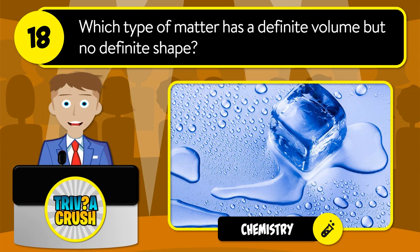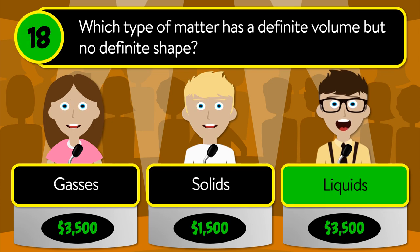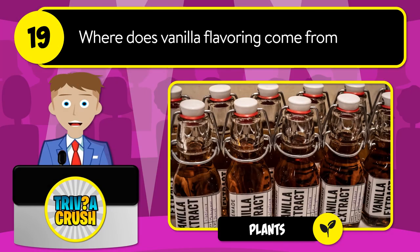Question number eighteen: which type of matter has a definite volume but no definite shape? Is it gases, solids, or liquids? The correct answer is liquids.